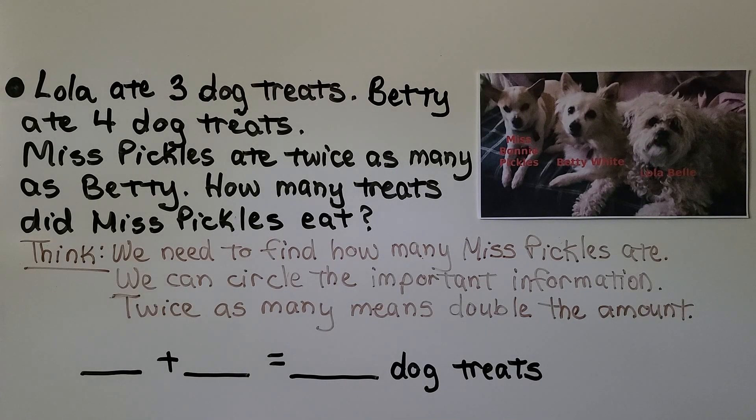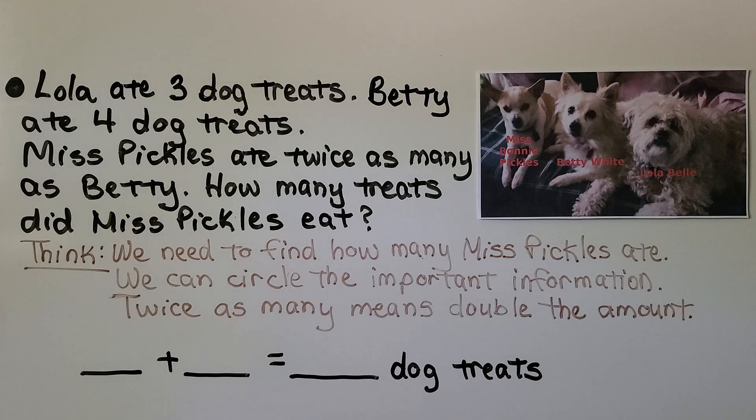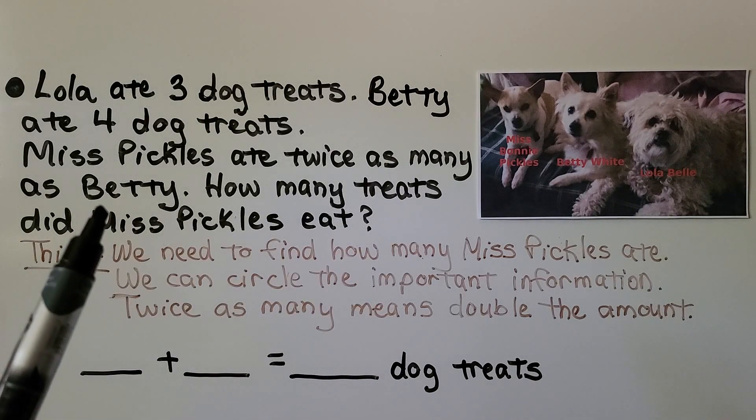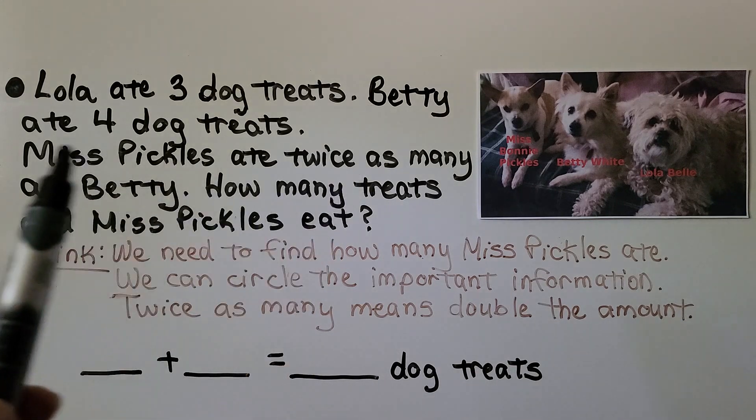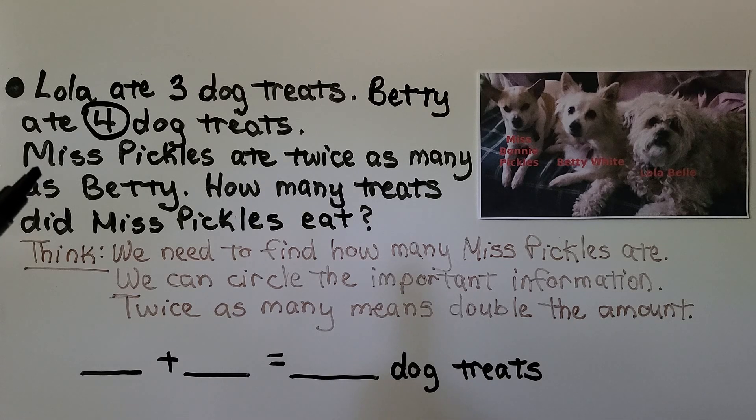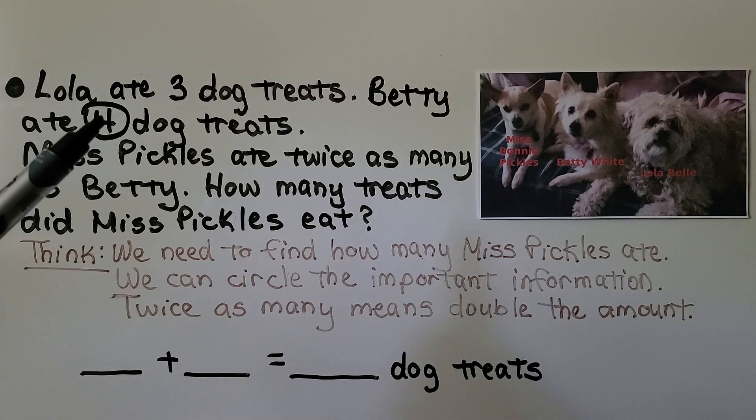So we think we need to find how many Miss Pickles ate. And we can circle the important information. It says Miss Pickles ate twice as many as Betty. Betty ate 4.